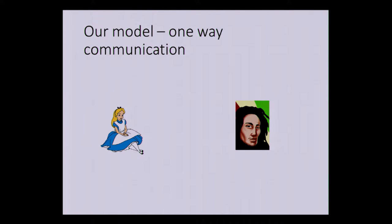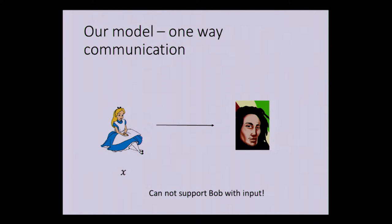More explicitly, we have Alice and Bob. Alice has an input X and she wants to realize a secure computation task in a setting where Bob has no input. So Bob should just get the output, and this communication is going to be done over a noisy channel. We're going to be interested in different kinds of noisy channels.